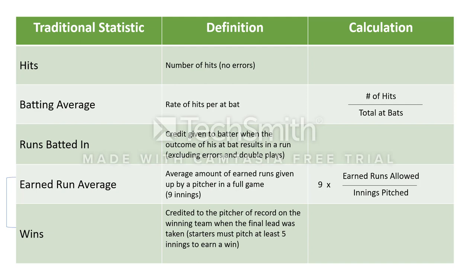This is a chart with some of the more basic traditional statistics that have historically been used to indicate player success. While somewhat useful, they're not truly indicative of the best and worst players. Many traditional statistics, such as RBIs, depend on opportunity and the contribution of a player's teammates. Placing too much value on these stats leads to an inaccurate representation of a player's performance. Sabermetrics attempts to provide a more accurate representation by taking more individual factors into account.